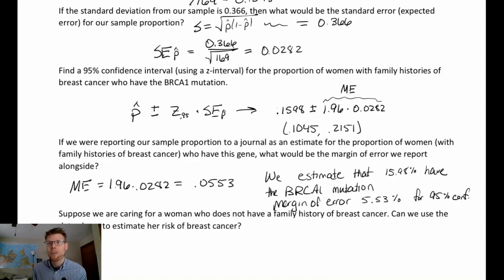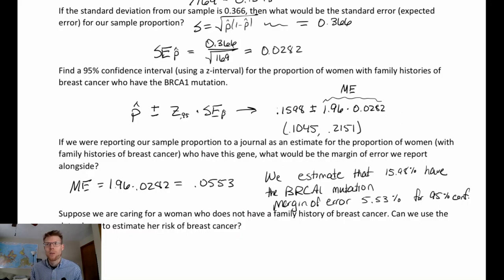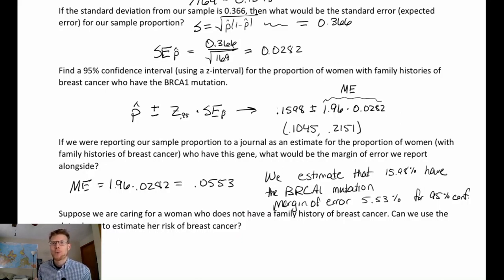If we wanted to be 99% confident that our interval contains the true parameter, would the margin of error get bigger or smaller? It would get bigger. If you want more confidence, you need a larger interval — you need to cover more ground to be more sure you've captured the true value.